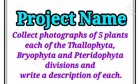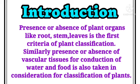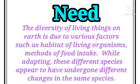Project name: collect proof photographs of five plants each of Thallophyta, Bryophyta, and Pteridophyta divisions and write a description of each. Introduction: presence or absence of plant organs like root, stem, and leaves is the first criteria of plant classification. Similarly, presence or absence of vascular tissues for conduction of water and food is also taken into consideration for classification of plants.